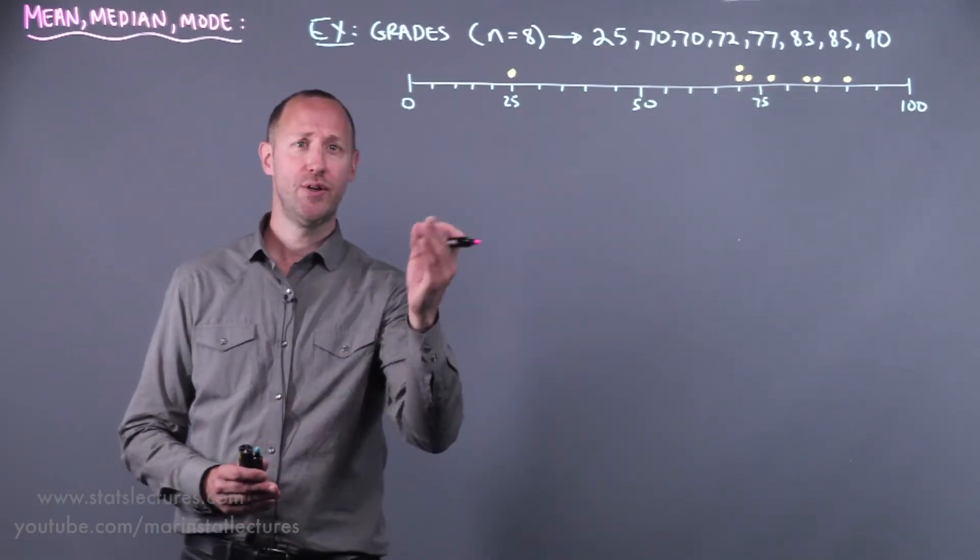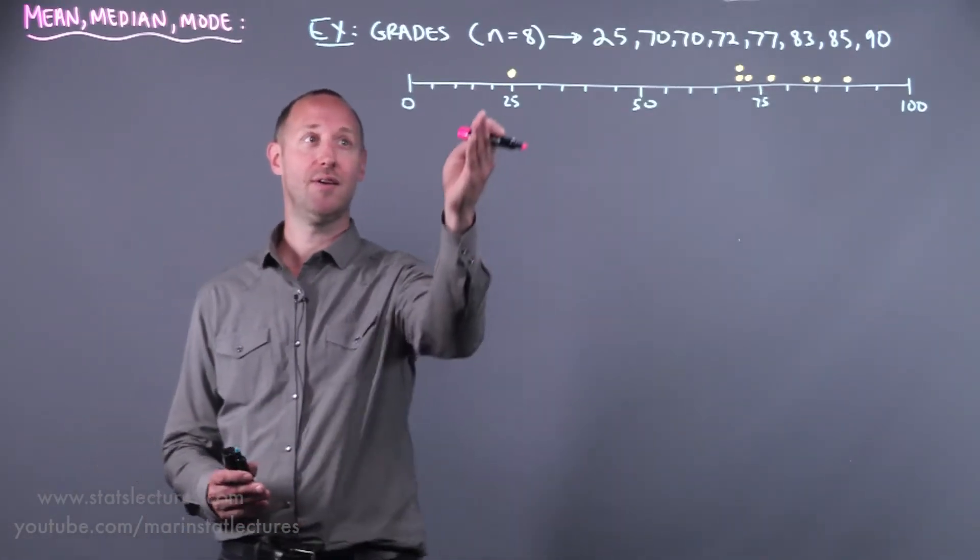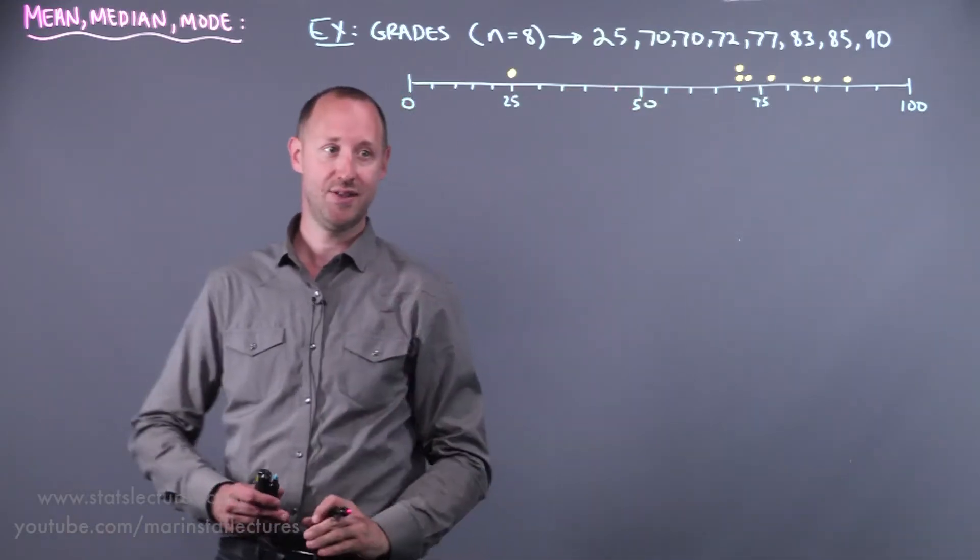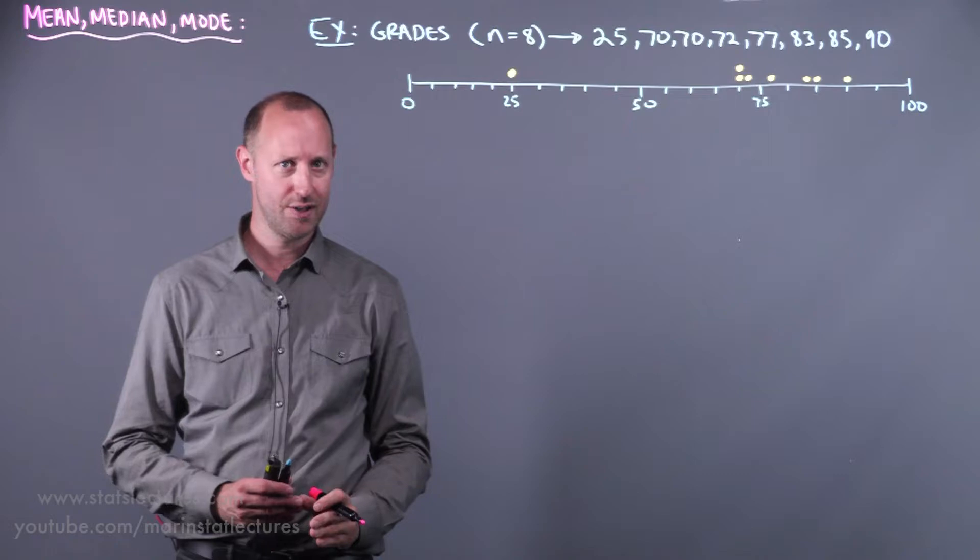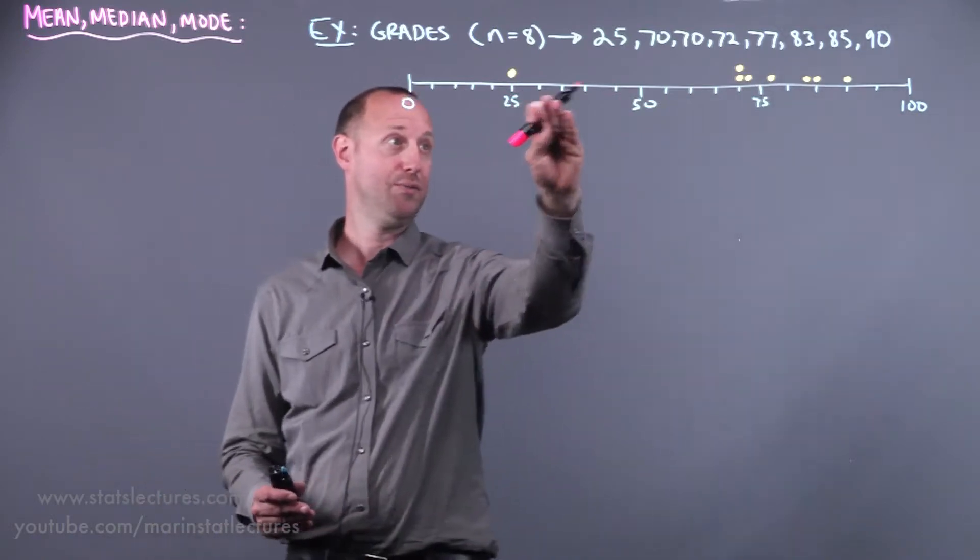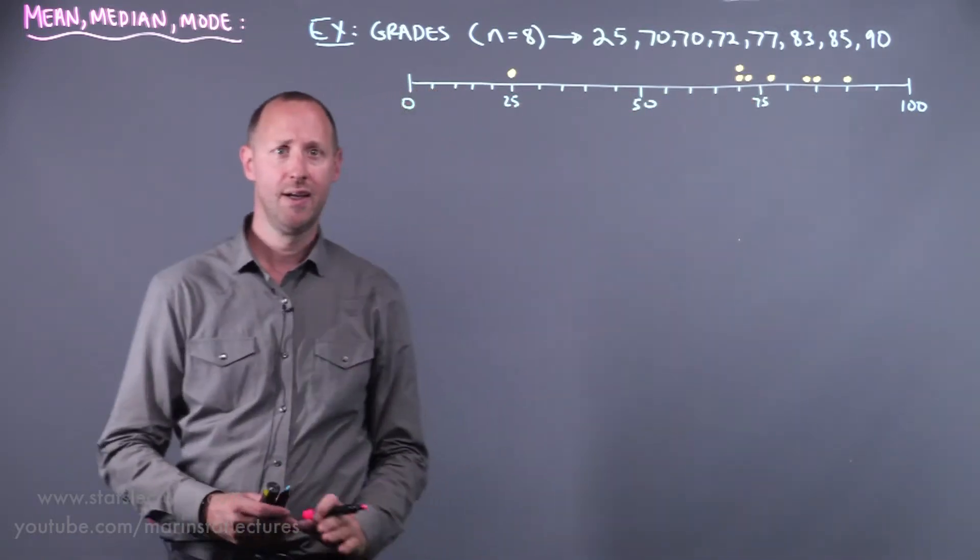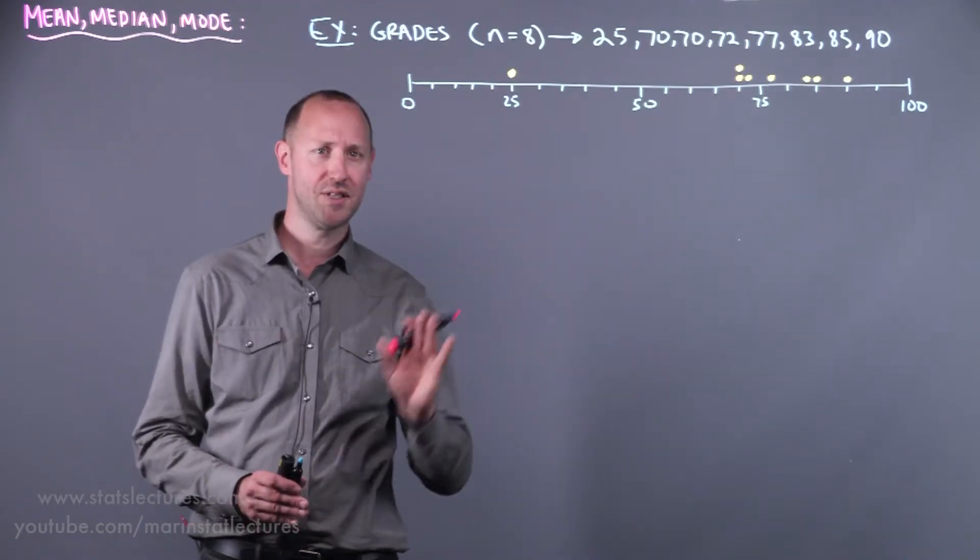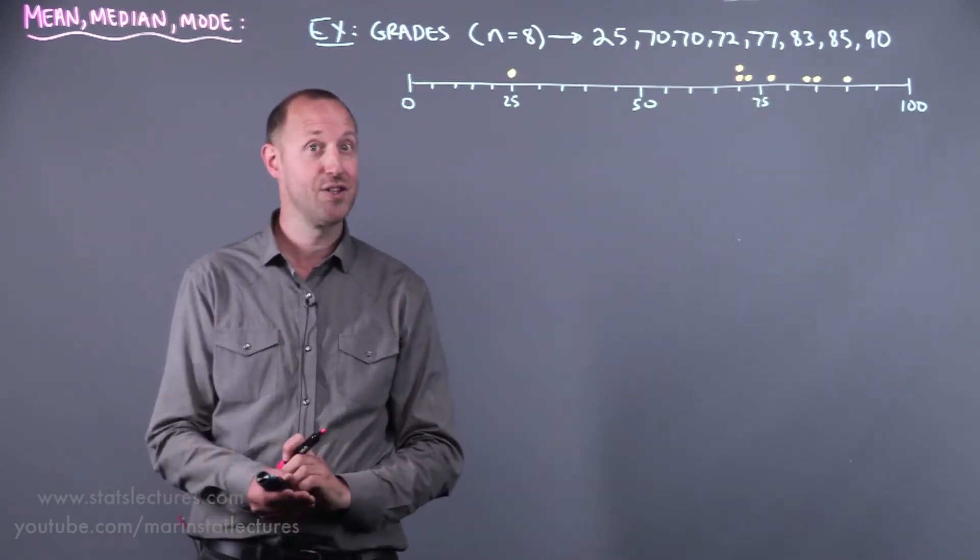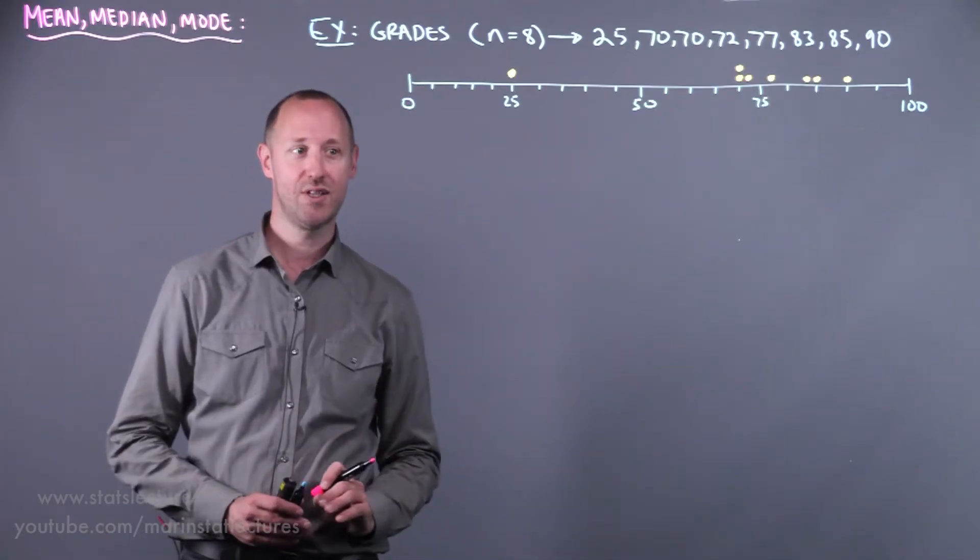To do so we're going to use this simple example here where I've got grades recorded for eight students. I've got them placed here already in order from smallest to largest and I've also put the points here on a number line. I'm using only eight observations so we can have a small simple data set that we can do all the calculations quickly by hand with and focus on the concepts.